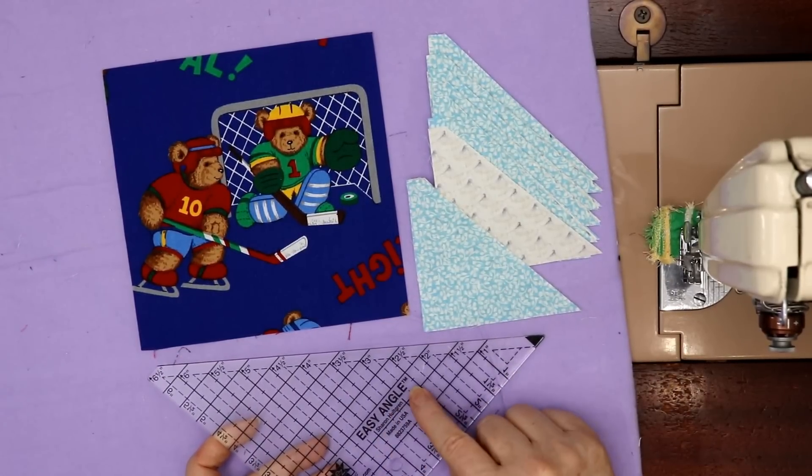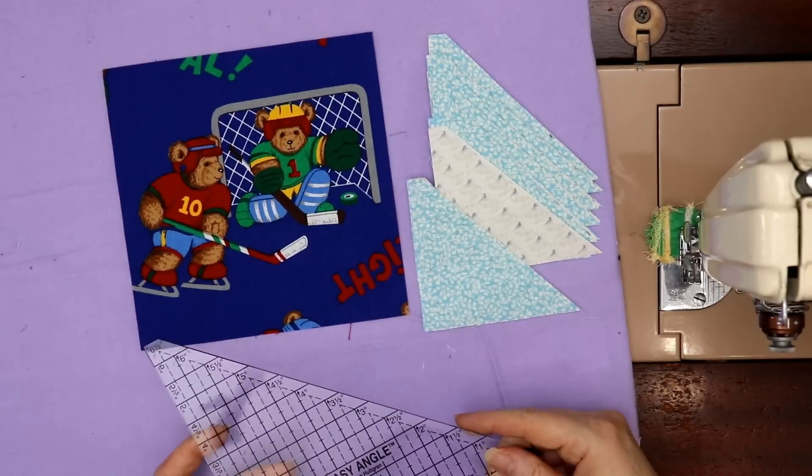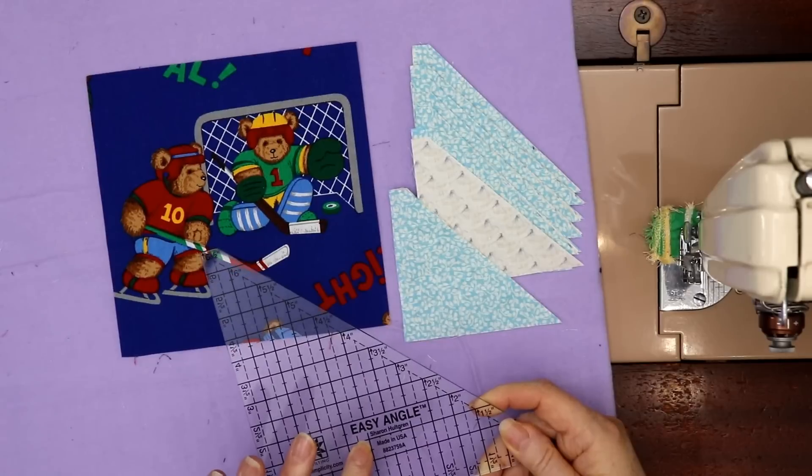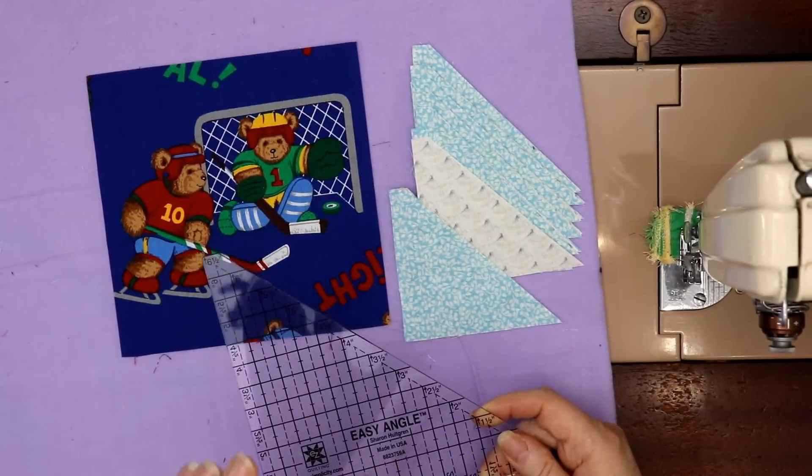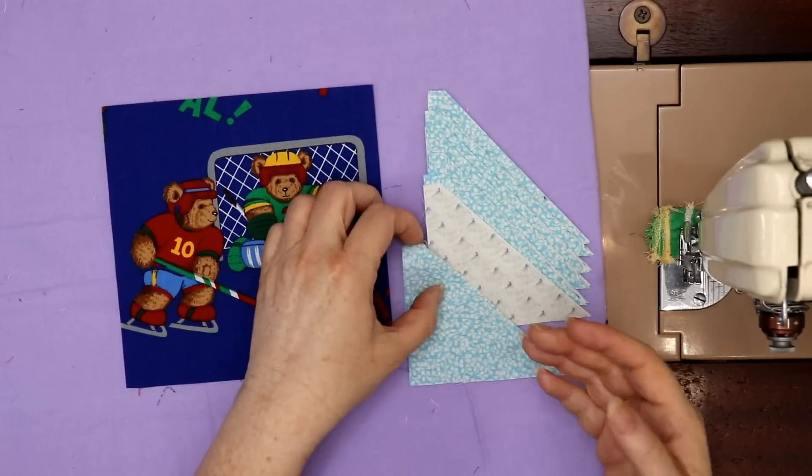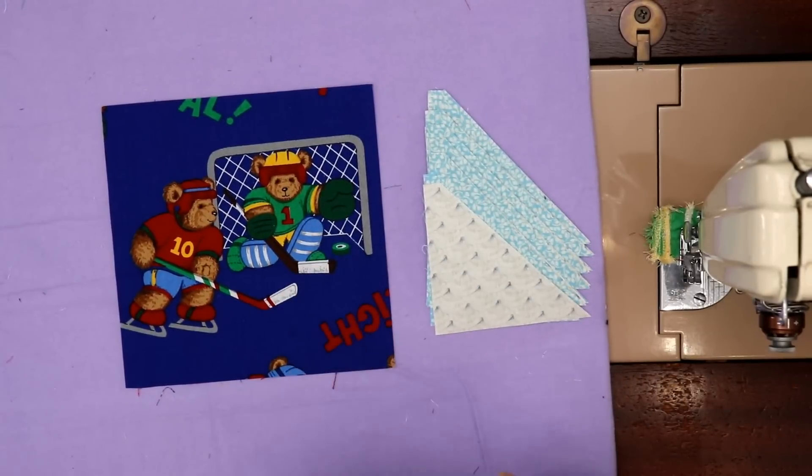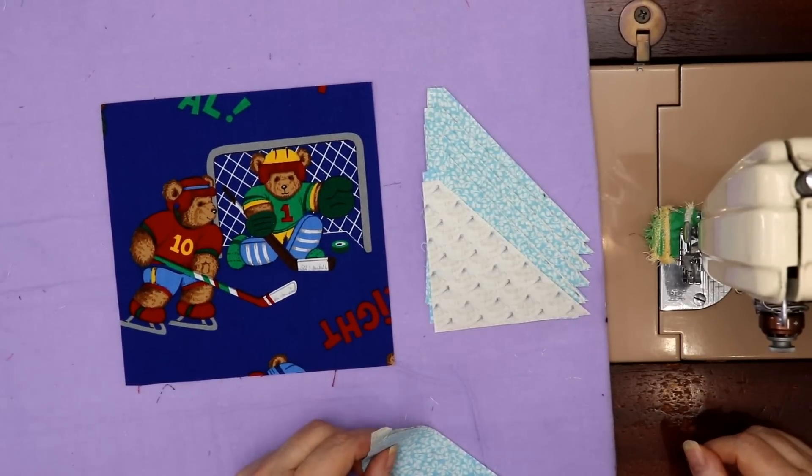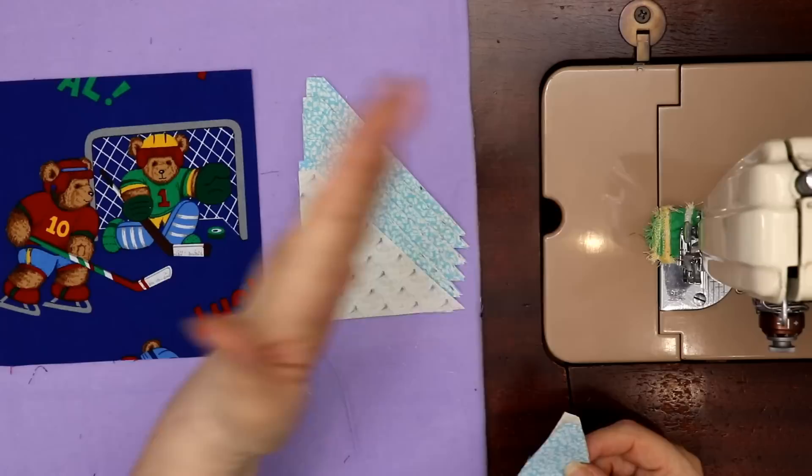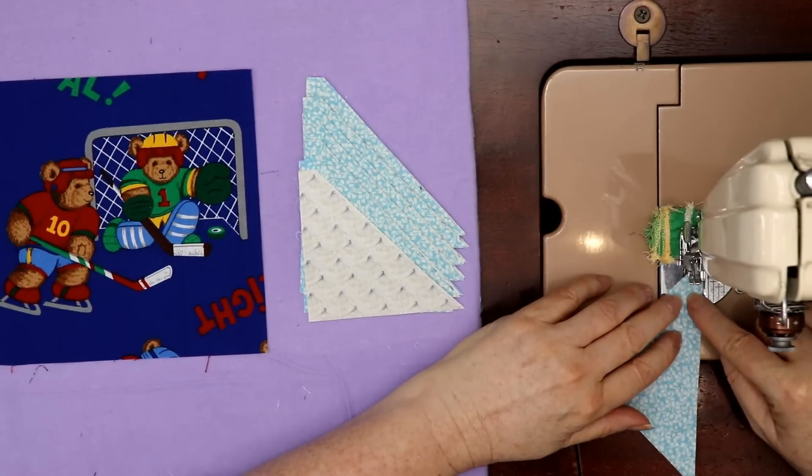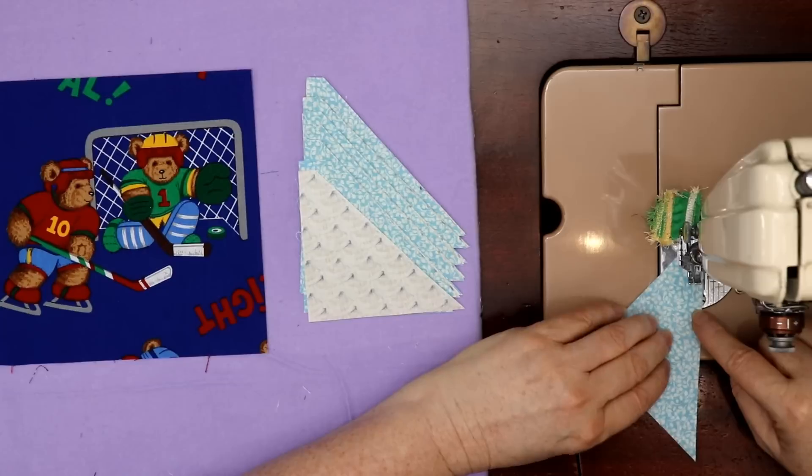If you don't have this easy angle ruler, I did give you the traditional size. You basically are cutting three and seven-eighths inch or four inch squares and you trim it down, then you cut it on the diagonal once. The hardest part of this block is your half square triangle.